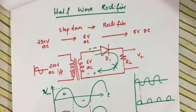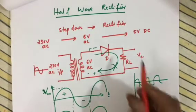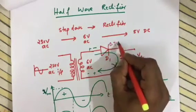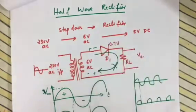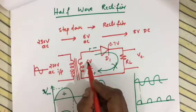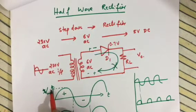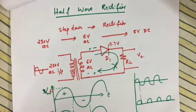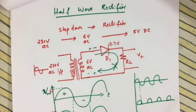If the diode is a silicon diode, there will be a 0.7 volt drop when it is conducting. So if Vm is the peak voltage, we get Vm minus 0.7 at the output. If we have a 6 volt transformer, we get approximately 5.3 volt, which is roughly 5 volt DC. That is why 6 volt transformers are normally used for getting 5 volt DC.